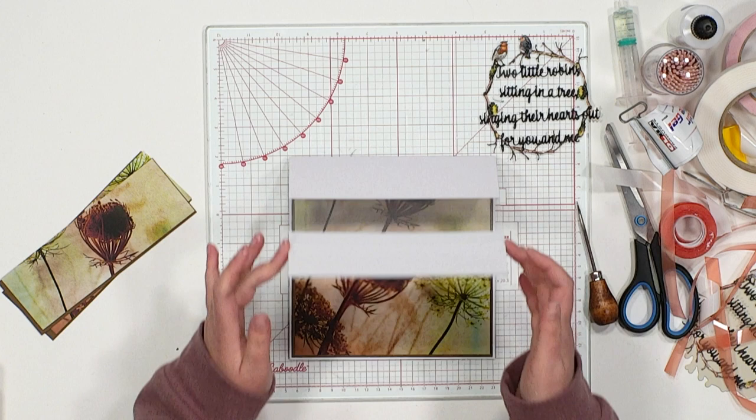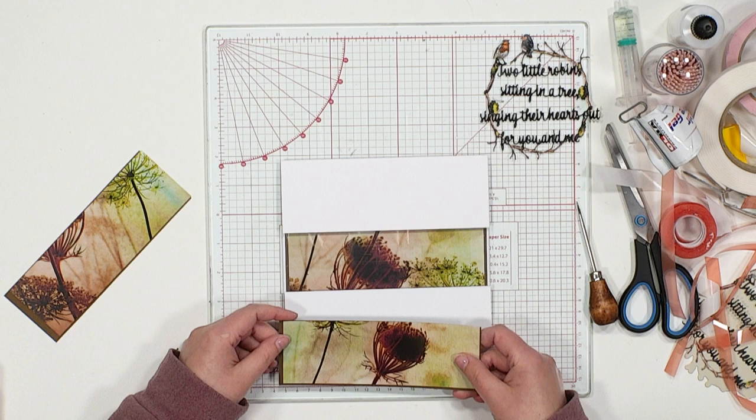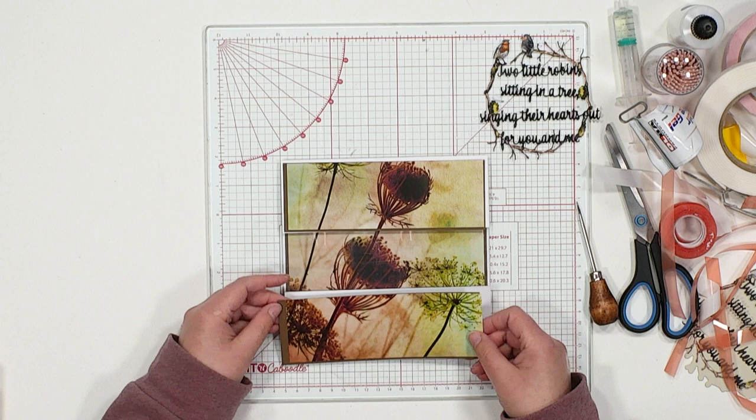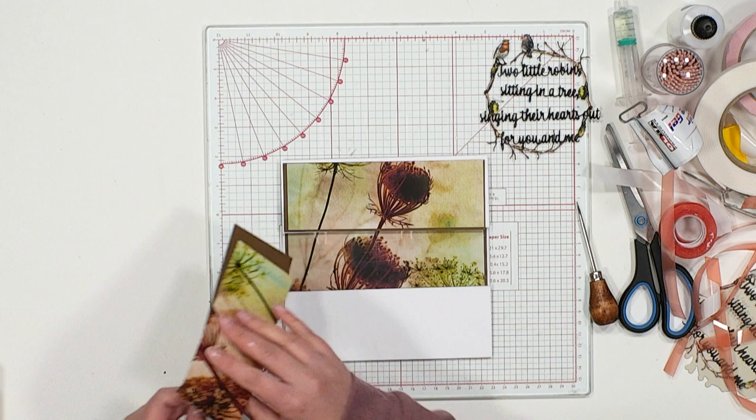And then we can just peel back that edge to remove the second part of the tape there as well. So now for the front, we want to continue that same pattern we've got on the inside. So all we've done is taken that same image again. We have then cut the same color border as the inside.